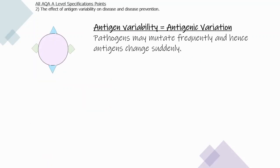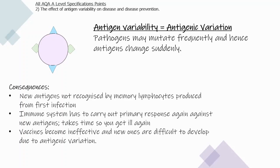Antigen variability, also known as antigenic variation, is when pathogens mutate frequently and hence their antigens can change suddenly. The consequence is that the new antigens are not recognised by the memory lymphocytes produced from the first infection. The immune system therefore has to carry out another primary response, producing new antibodies specific to the new antigens. Because this takes time, you get ill again. This also means vaccines can become ineffective because the new antigens are difficult to account for.